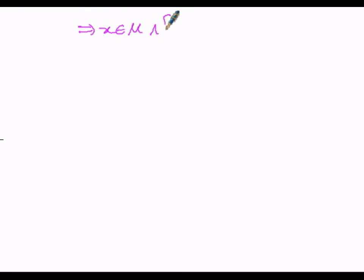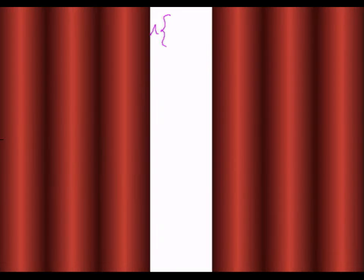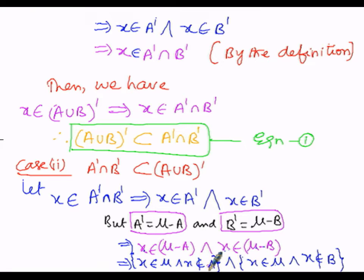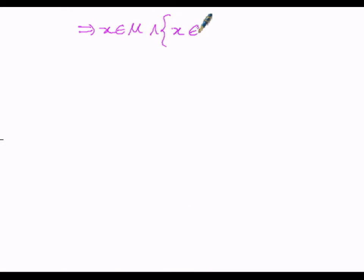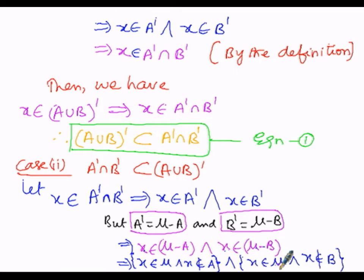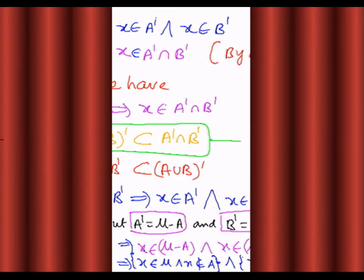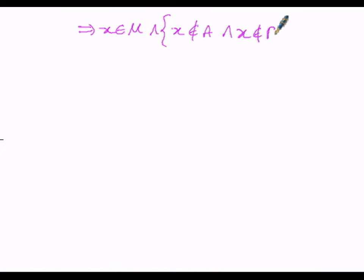That implies: x belongs to μ, and taking 'x belongs to μ and' as common — in the first case, 'x does not belong to A' is left over in the bracket, and in the second case, 'x does not belong to B' is left over in the bracket.